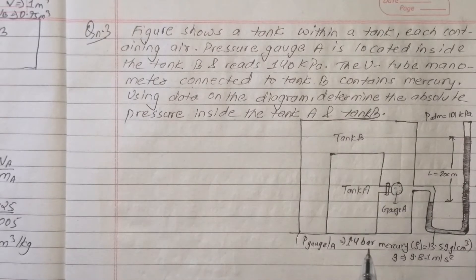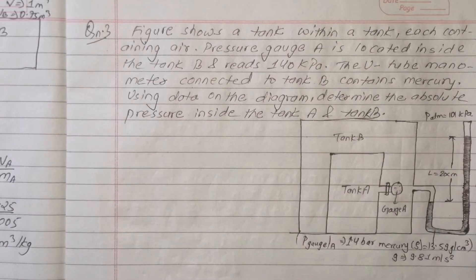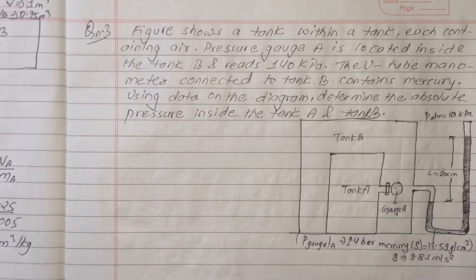Pressure gauge of A multiplied by 100 gives the unit in kPa or bar. The manometer connected to tank B contains mercury. Using the data on the diagram, determine the absolute pressure inside tank A and tank B.